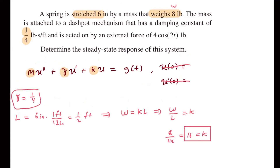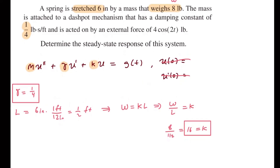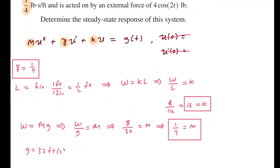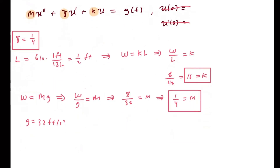We got k and we have gamma. Now the next thing we need to find is m, the mass. We know that w equals mass times the gravitational force, so m equals w over g. Since we're using feet, we use g equal to 32 feet per second squared. So m equals 8 divided by 32, which simplifies to one-fourth.